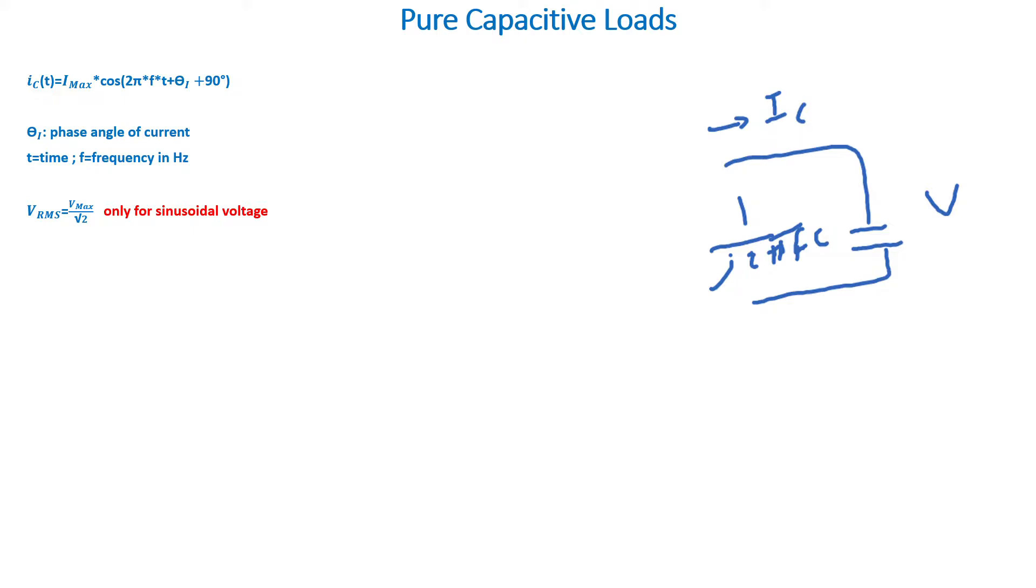The RMS value of the voltage is equal to the peak value of the voltage divided by the square root of 2, and this is only valid for sinusoidal voltages.